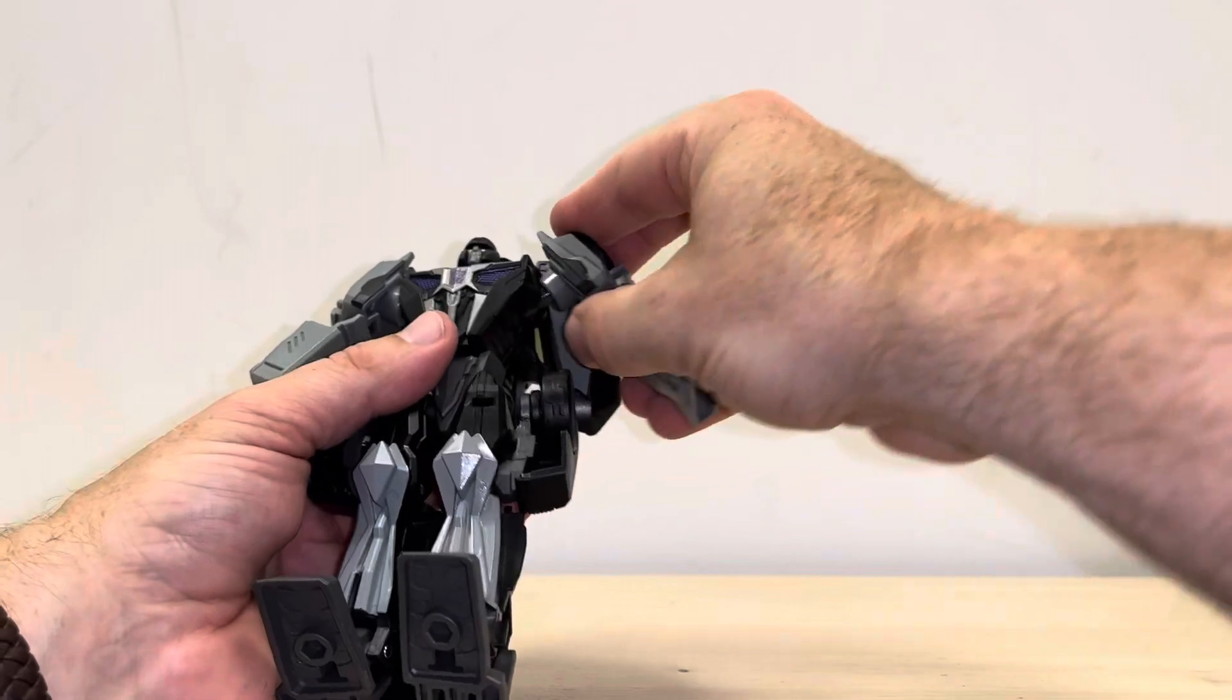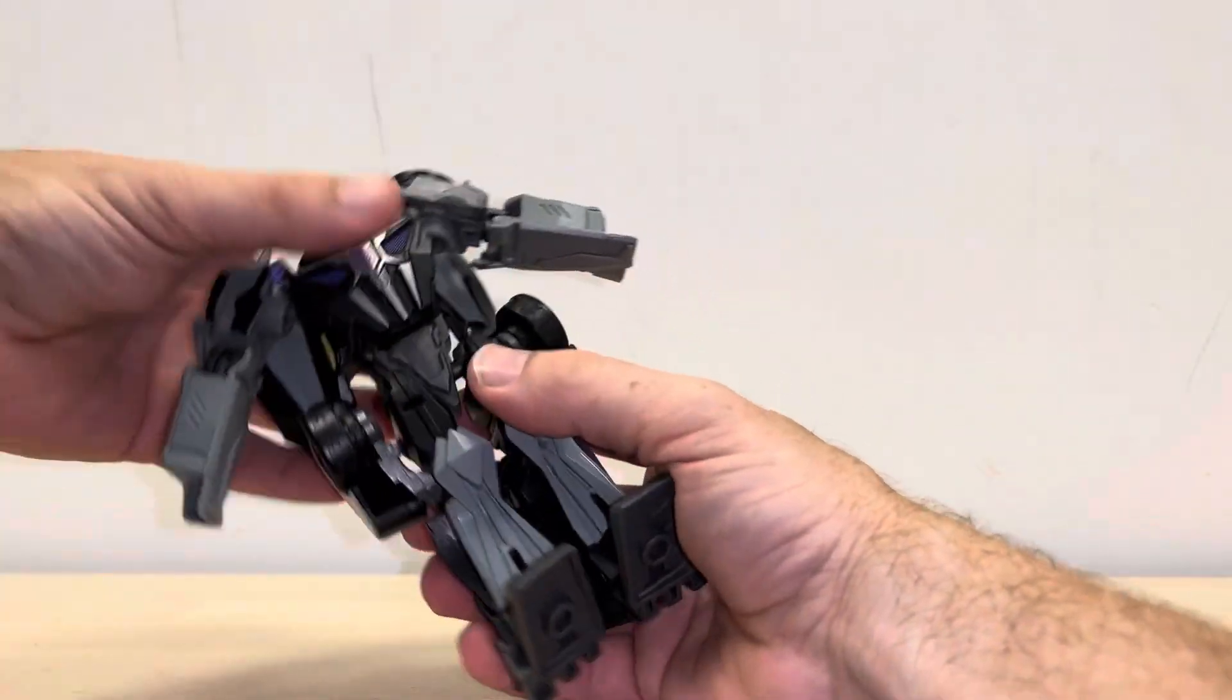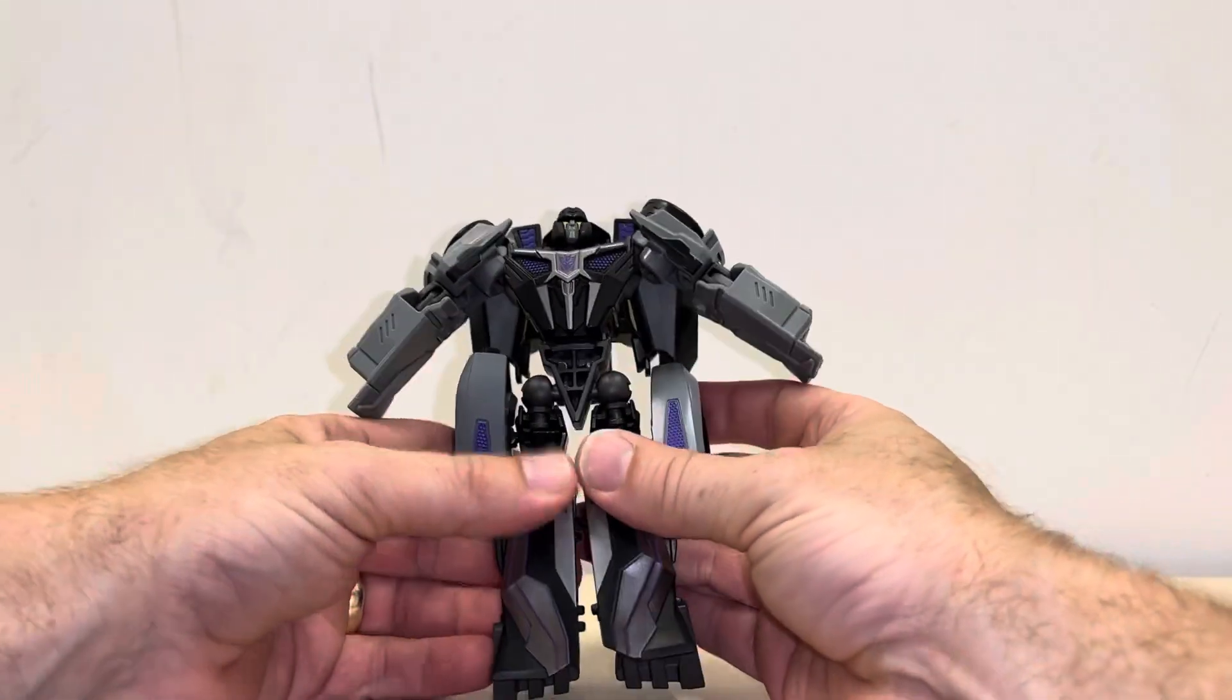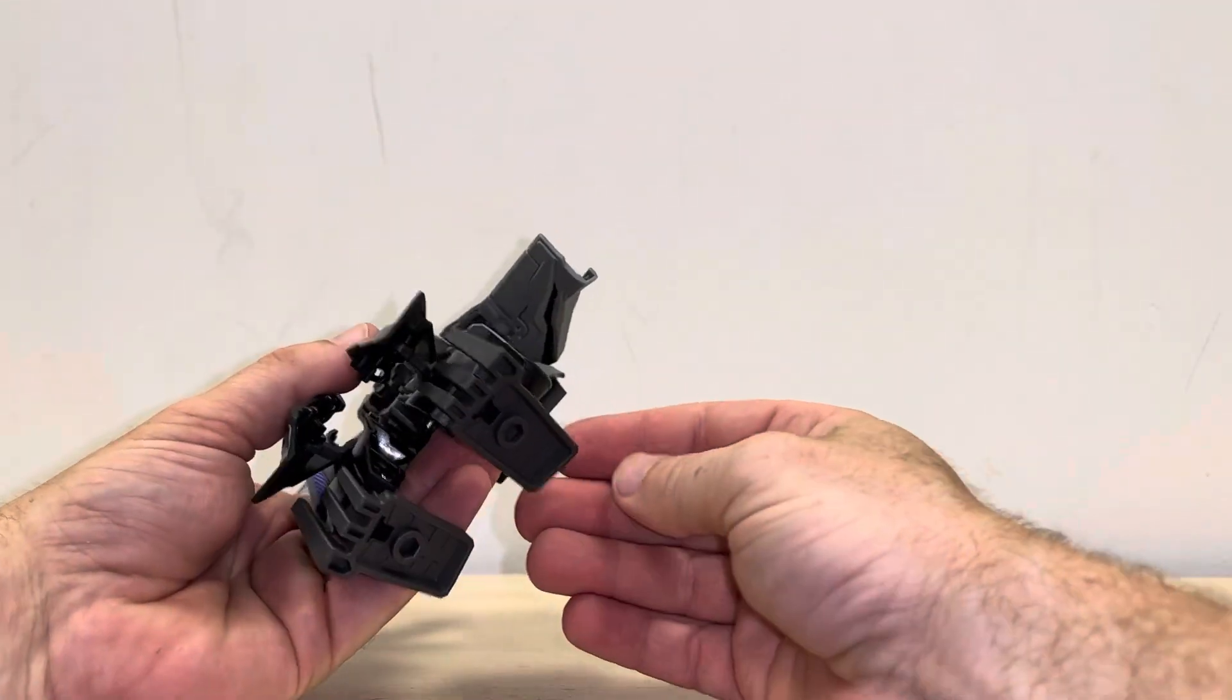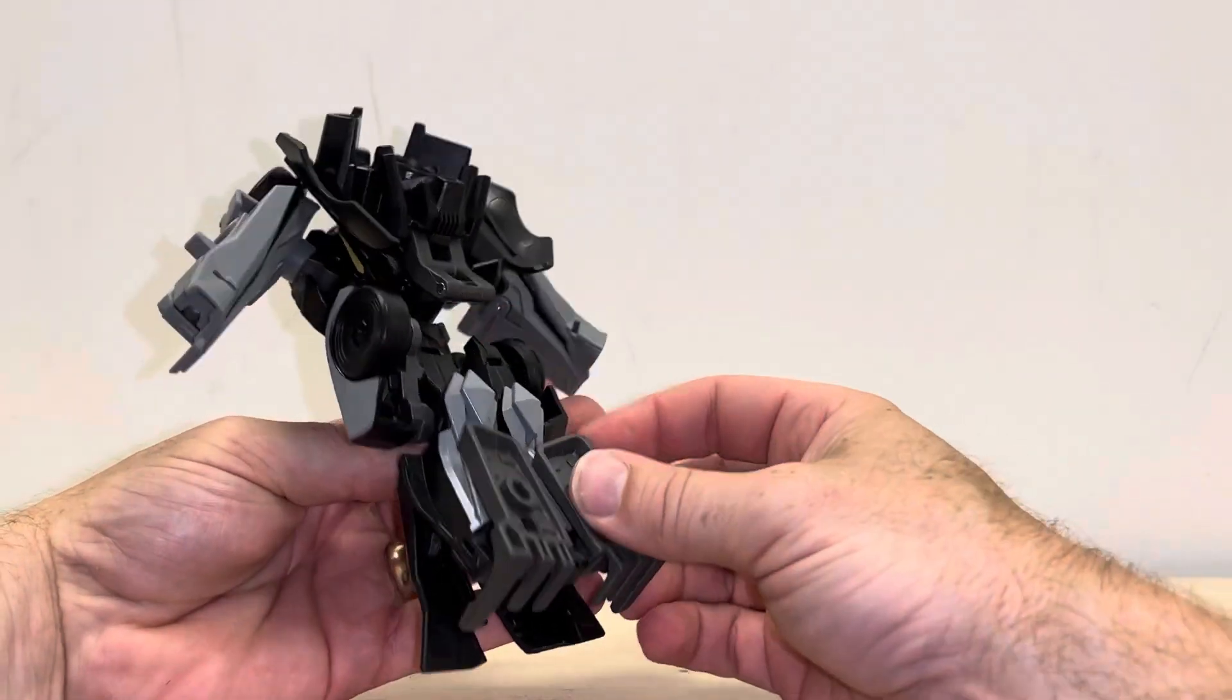Let's lift the arms just out of the way for now because we're going to do quite a bit with the arms. Take the waist now, spin it around 180 degrees, make sure it's smack bang in the middle. Take the feet and then fold these down into the back of what's going to be the shins.